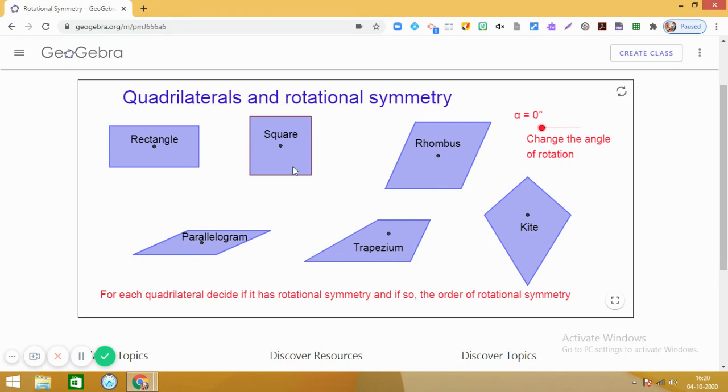rectangle, square, rhombus, kite, trapezium, and parallelogram. So, you have studied about all of them in your class.